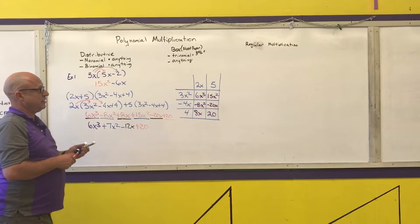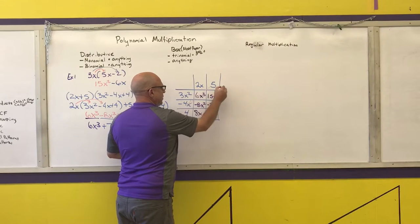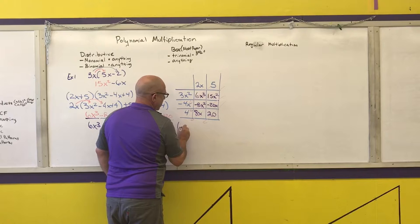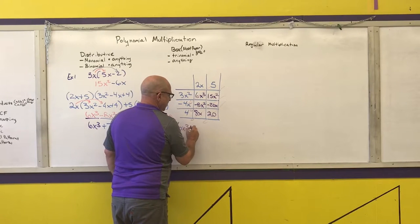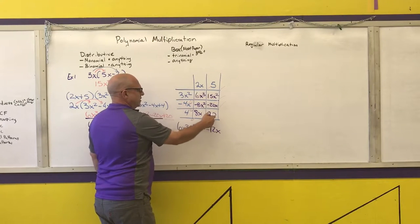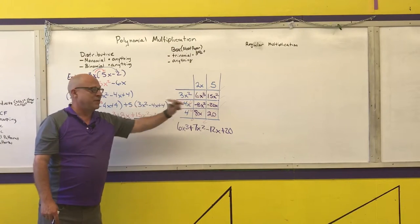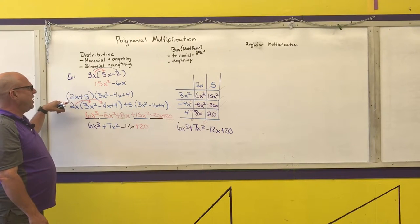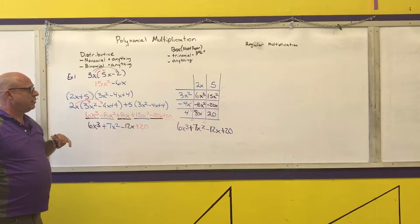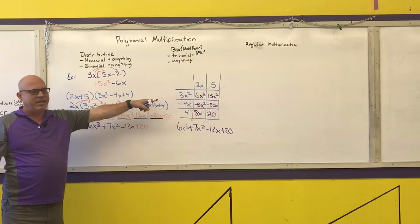Now I need to combine like terms. In most cases using the box method, like terms are going to be on diagonals. So I have 6x³, then 15x² minus 8x² is 7x², negative 20x plus 8x is negative 12x, plus 20. Notice I get the exact same answer as before. This starts to get big if you do anything more than a trinomial times a trinomial.